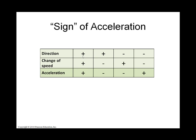If the object is moving in a positive direction and acceleration is positive, it'll speed up. If it's moving in a positive direction and the acceleration is opposing it, it'll slow down. If it's moving in a negative direction and the acceleration is also in the negative direction, it'll speed up. If it's moving in a negative direction and the acceleration is in the positive direction, it'll slow down.